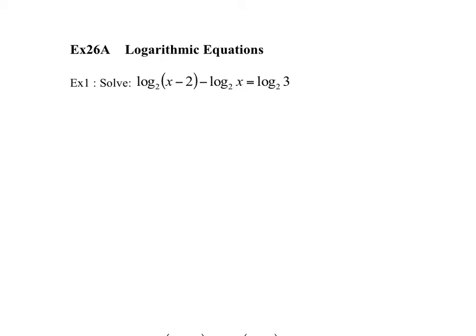In this first example, every single term has a log in it — log base 2. So we're going to use our log laws on the left hand side here to simplify this. This is a division because we have subtraction, so we can simplify to log base 2 of (x minus 2) divided by x. This is equal to log base 2 of 3.